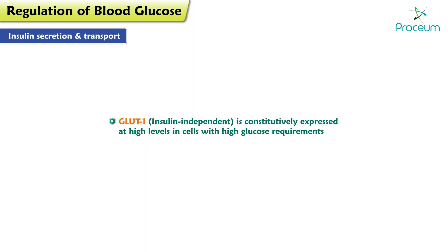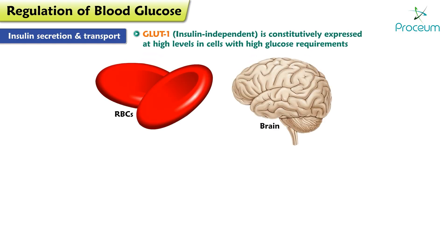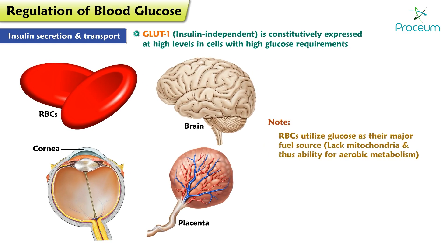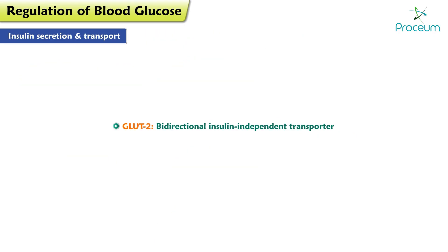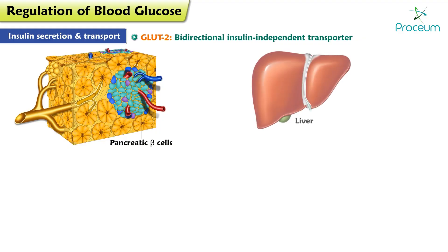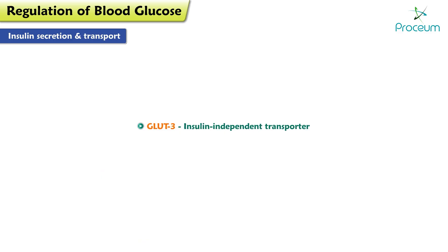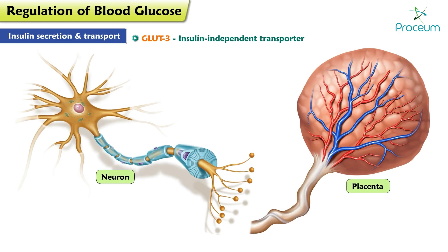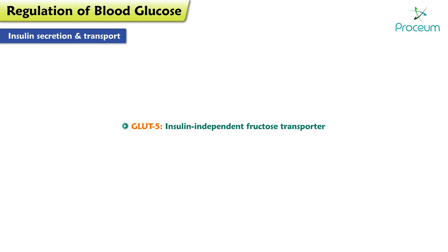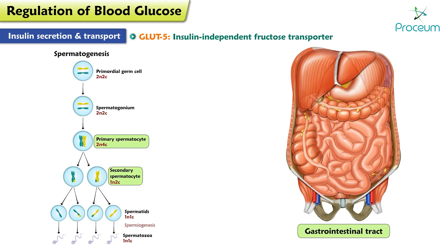GLUT1, which is insulin-independent, is constitutively expressed at high levels in cells with high glucose requirements — namely RBCs, the brain, the cornea, and the placenta. Note that RBCs utilize glucose as their major fuel source because they lack mitochondria and thus the ability for aerobic metabolism. GLUT2 is a bi-directional insulin-independent transporter important for pancreatic beta islet cells, the liver, the kidney, and the small intestine. GLUT3 is an insulin-independent transporter found predominantly on neurons and the placenta. GLUT5 is an insulin-independent fructose transporter found in spermatocytes and the gastrointestinal tract.